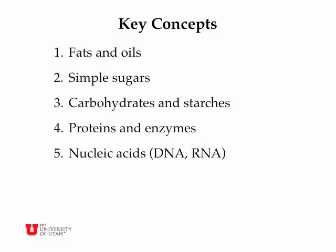We're going to talk about five different types of molecules. The first is fats and oils, and we'll talk about simple sugars and compound sugars. We'll talk about carbohydrates and starches, which are polymers of sugars. We'll talk about proteins, which are polymers of amino acids. And finally, we'll talk about the ultimate polymer nucleic acids, which are deoxyribonucleic acid and ribonucleic acid.